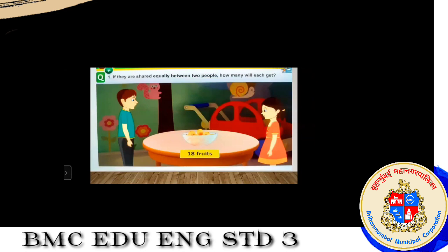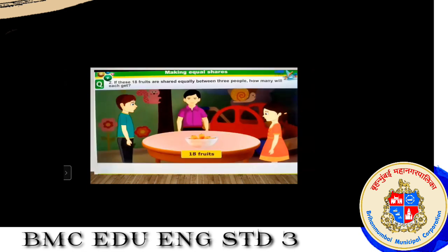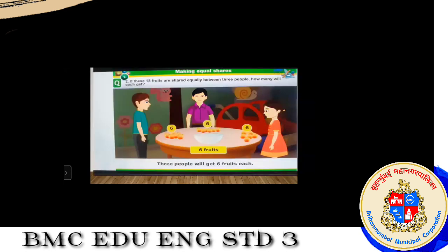There are 18 fruits in a basket. If shared equally between two people, each gets nine fruits. If the same 18 fruits are shared equally among three people, each gets six fruits.